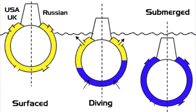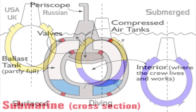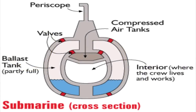Depending what depth they wish to dive, sailors simply adjust the ratio of air and water in the tanks, and when ready to resurface, they blow compressed air into the tanks, forcing the seawater out, lowering the density, and thus causing them to rise back to the surface.